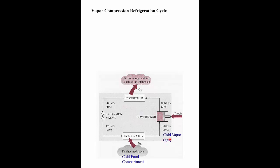We start with cold vapor — for example, R134A. It sets off as a gas and then we put it into the compressor and compress it down. When you compress a gas, it gets hot. So we compress the gas and it goes from minus 20 degrees C to 60 degrees C, and the pressure increases from 120 kilopascals to 800 kilopascals, so to high pressure. The temperature has increased, and up here we have hot gas.